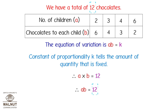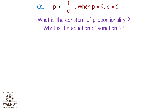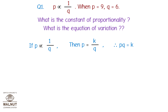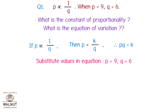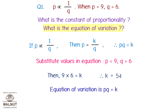P is inversely proportional to Q. When P = 9 and Q = 6, what is the constant of proportionality and the equation of variation? Since P × Q = K, substituting gives 9 × 6 = K, so K = 54. The constant of proportionality is 54, and the equation of variation is P × Q = 54.